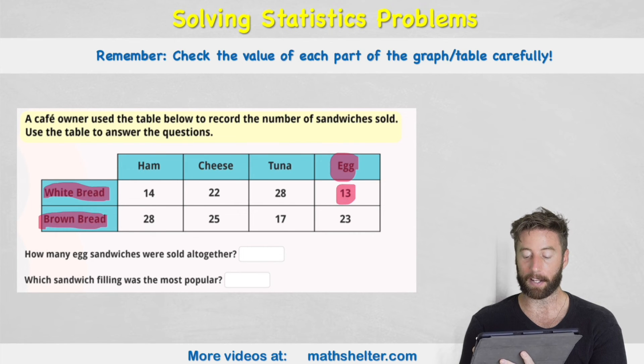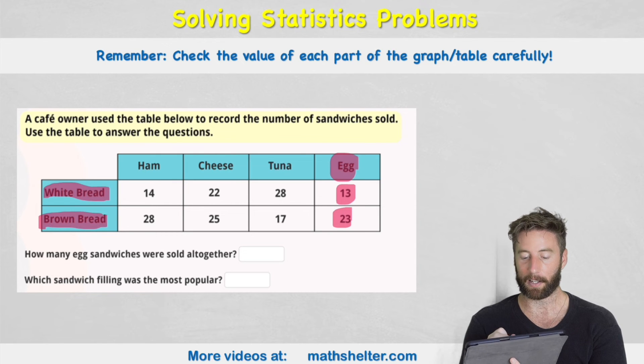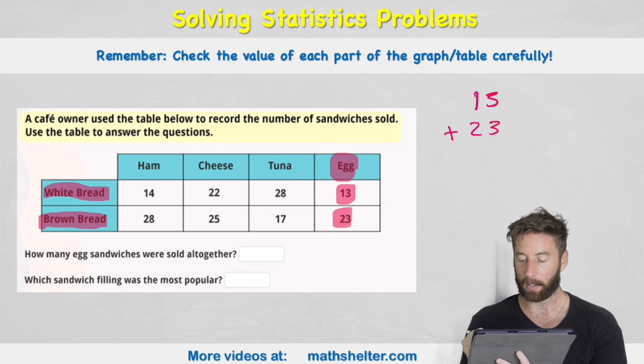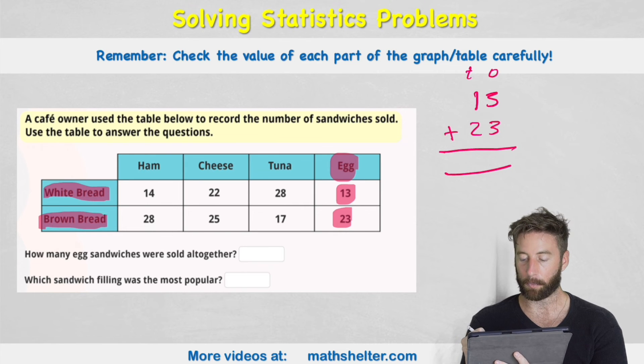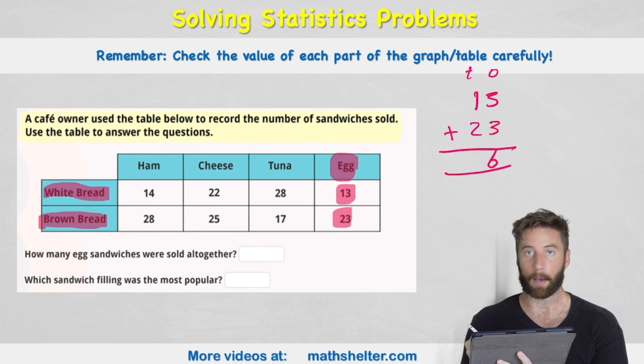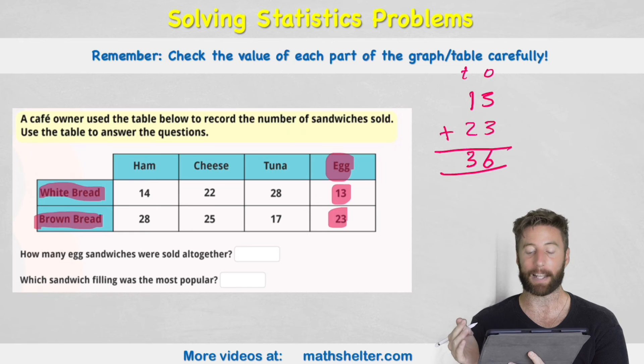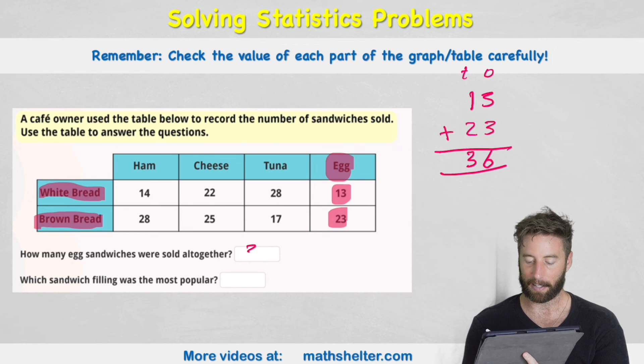I can see it here and it says how many egg sandwiches were sold all together. So it's talking about white bread and brown bread. So I'm going to be adding my 13 to 23 and this time I'm going to use column addition. 13 add 23. Do my ones and tens and I'm ready to start. Start with my smallest value. My ones: 3 add 3 is 6 and my tens: 1 and 2 is 3. So my answer to how many egg sandwiches were sold all together is 36.